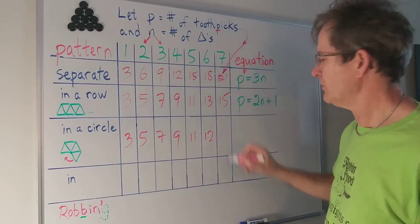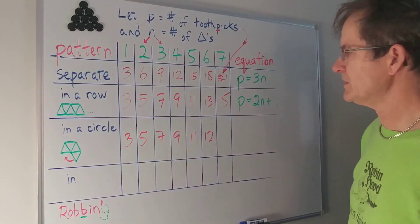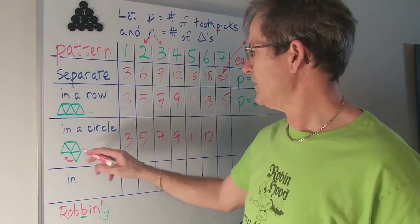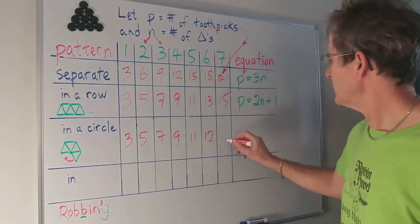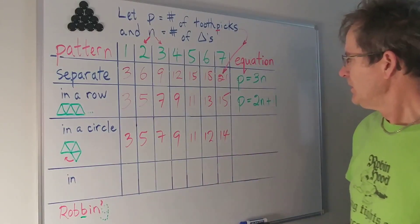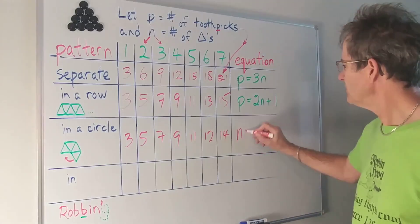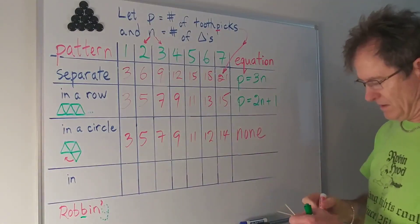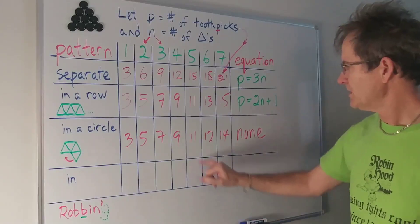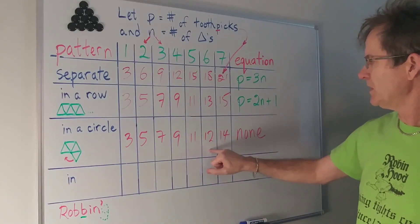So it takes 12, not 13. And then if you wanted to build another triangle on the outside somewhere it would take two more. So that's the pattern. What's the equation? Well there is none, because the pattern breaks down right between here and here.